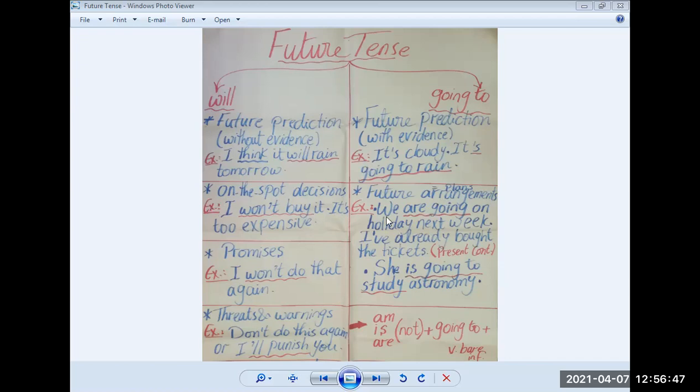However, for going to, it's used to express future arrangements, future plans. Arrangements means plans. For example, she is going to study astronomy. She planned for this. She has a plan to study astronomy in the future. That's why we use is going to study.